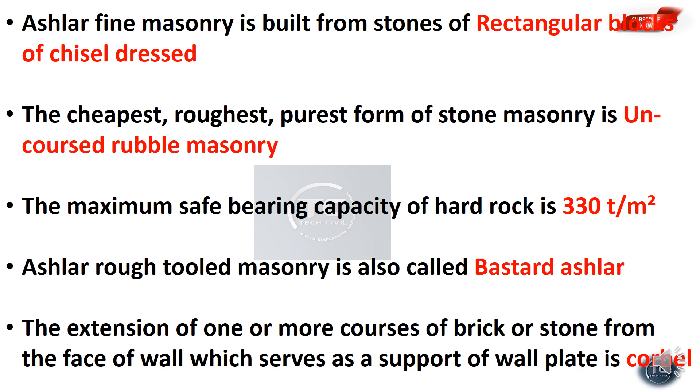The cheapest, roughest, and purest form of stone masonry is uncoursed rubble masonry. Uncoursed rubble masonry is the cheapest and roughest form of stone masonry.